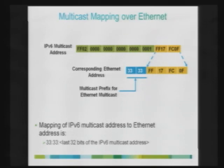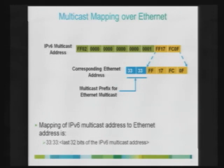In IPv4, there is an IPv4-to-MAC address mapping mechanism. In the IPv6 world, the multicast MAC address is created by taking the last 32 bits of the multicast IP address and prepending 33:33 — making a 48-bit MAC address. This is the standard process for creating a multicast MAC address for IPv6 multicast packets.